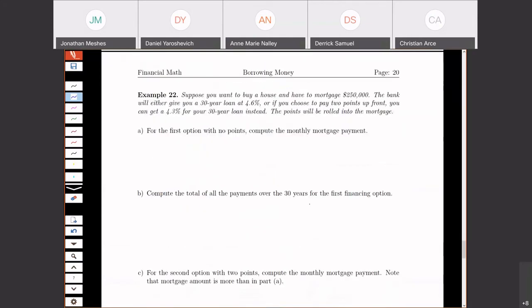Let's look at another example. Suppose you want to buy a house and we have to mortgage $250,000. In this example, we're not going to look at things like down payment and closing costs. We're just going to say this is the amount that we're mortgaging.